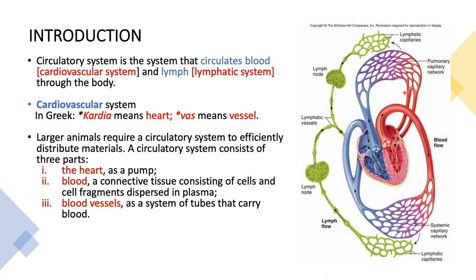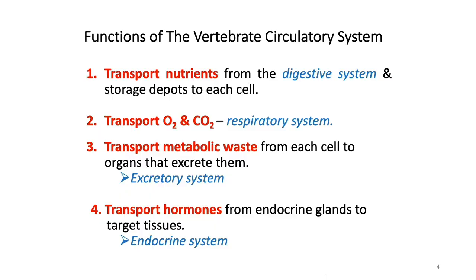A circulatory system consists of three parts: the heart, which acts as a pump; blood, the connective tissue consisting of cells and cell fragments dispersed in plasma; and also blood vessels, a system of tubes that carry blood. The circulatory system plays a vital role in vertebrates. Its functions include transporting nutrients from the digestive system and storage deposits to each cell, and transporting oxygen and carbon dioxide.